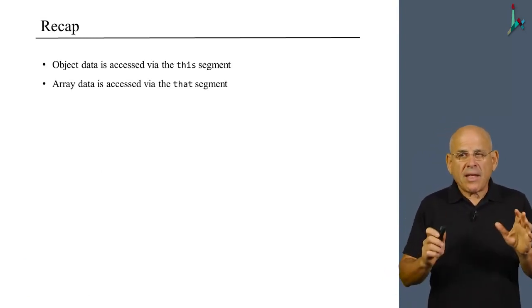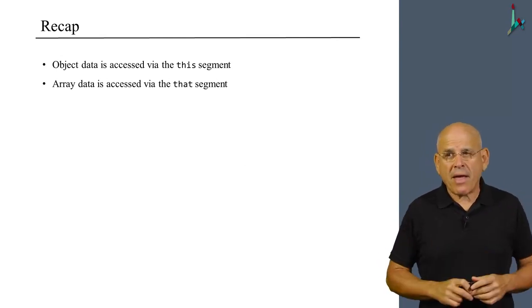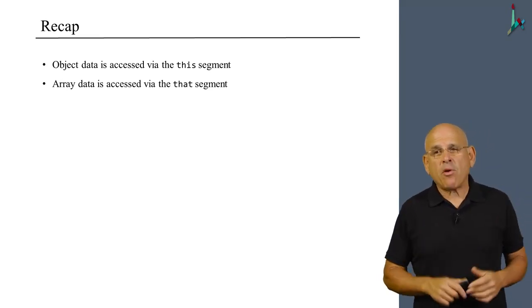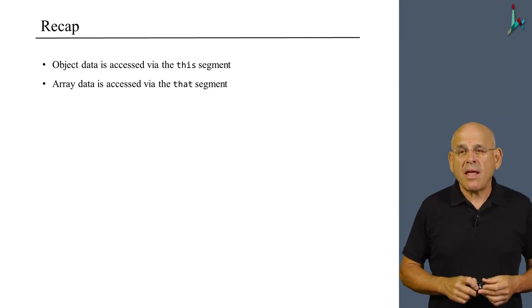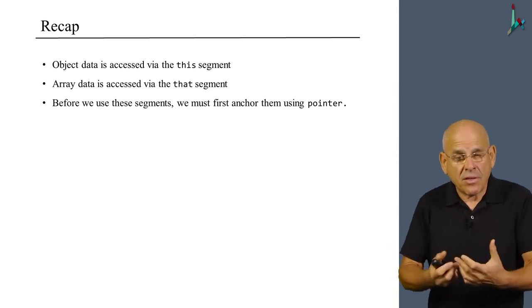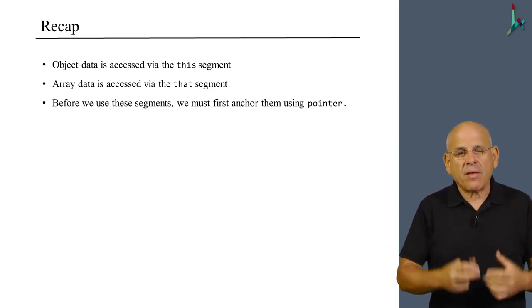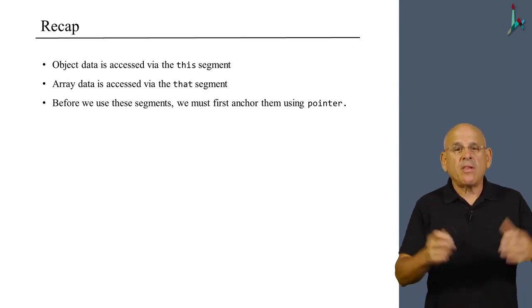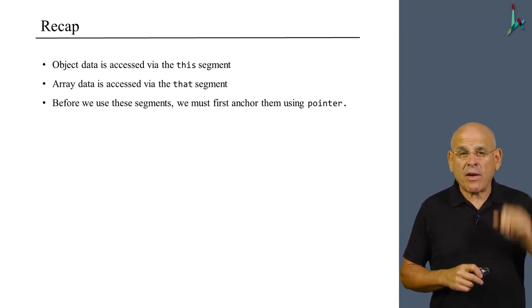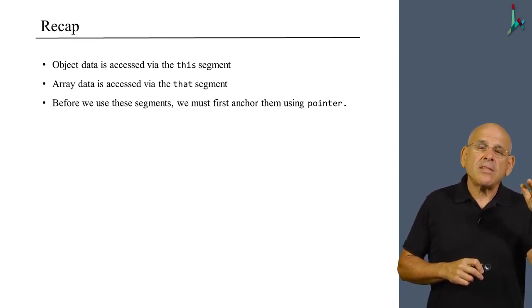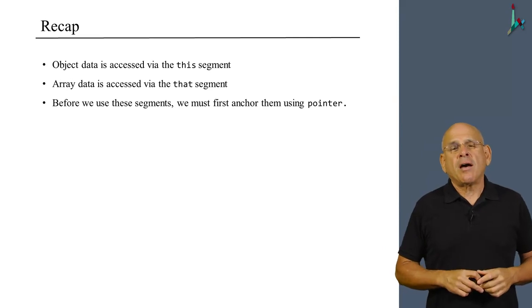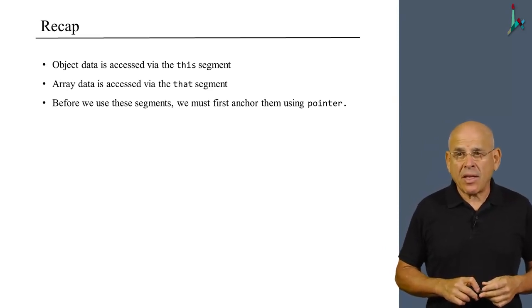To recap, object data is accessed by VM commands using this segment. Array data is accessed by VM commands using the that segment. In both cases, we need to write some VM code that first anchors this and that, or any one of them, on the desired location in the RAM, and we do this using the virtual pointer segment. It has two entries only, 0 and 1: 0 for setting this segment properly and 1 for setting that segment. But don't worry about the arrays because we'll deal with them later on in the course.